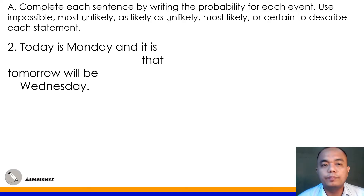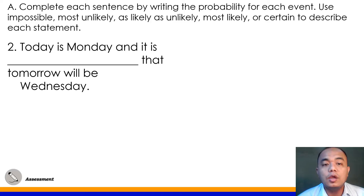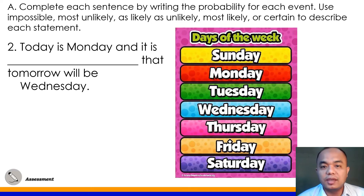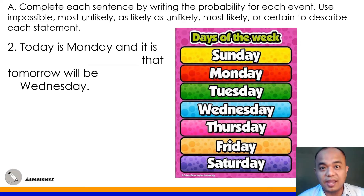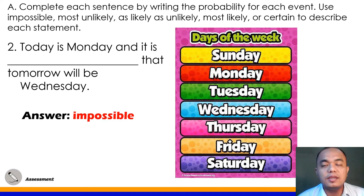Number 2: Today is Monday and it is blank that tomorrow will be Wednesday. Because tomorrow would be Tuesday, this would be impossible.